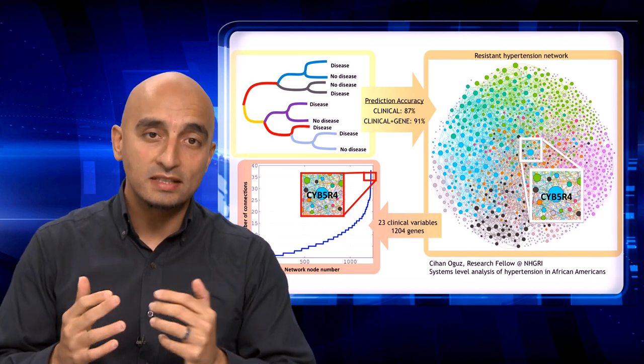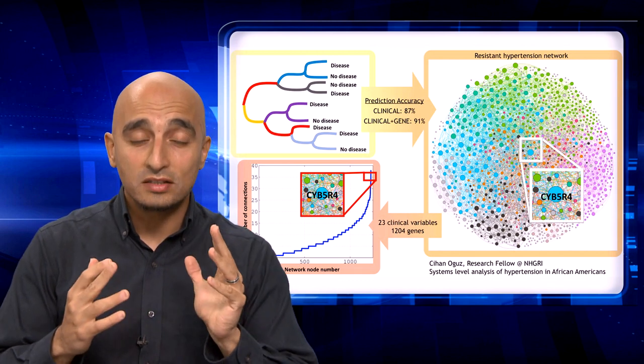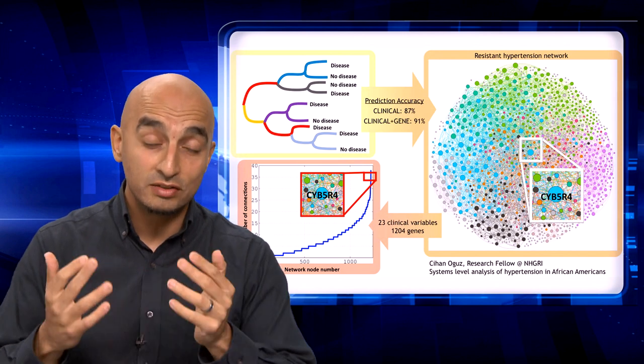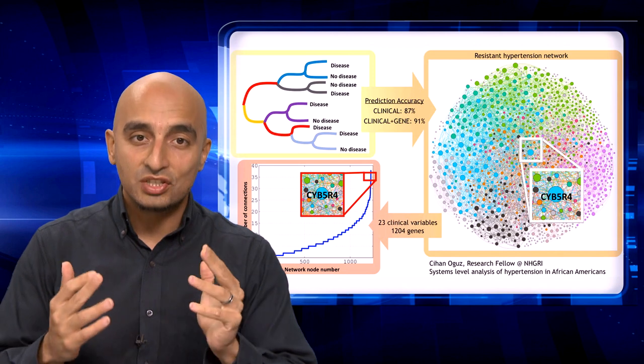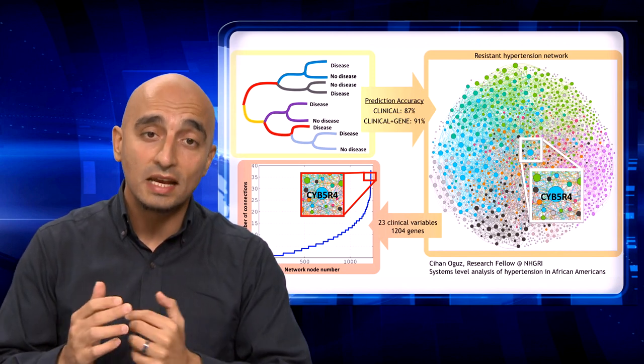In this study, I used three classes of variables: clinical variables, expression levels of 434 genes previously associated with blood pressure regulation in literature, as well as 707 additional genes extracted from our dataset based on their correlation with the hypertensive state.